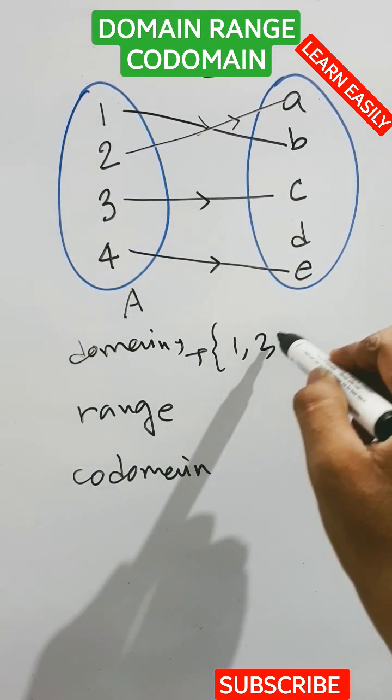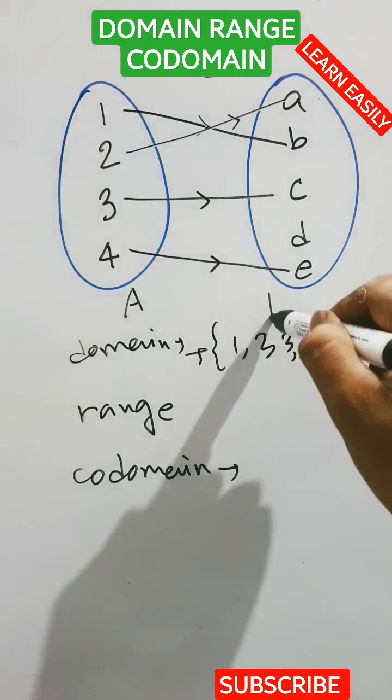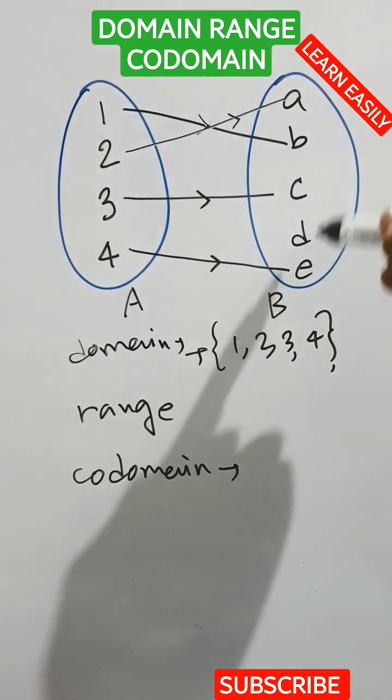This set, so domain is 1, 2, 3, 4. Now, codomain is the elements present in the set B.